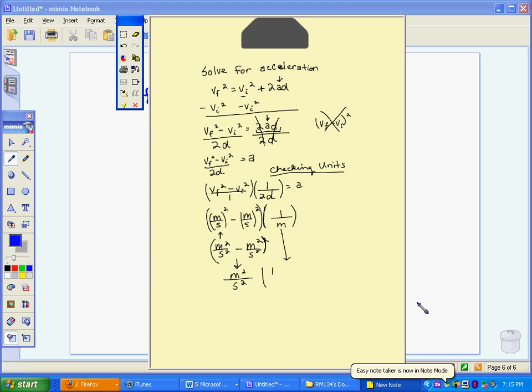Bring down this unit. Cross out this meter down here. This squared up here. The units that I end up with are meters per second squared.